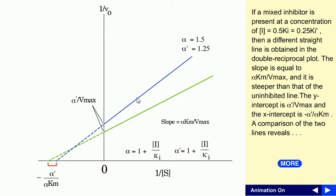With these values, we get a different straight line on the plot, but the lines are not parallel like in uncompetitive inhibition, and also not like competitive inhibition. The slope in this case equals α·Km divided by Vmax, which resembles the slope form of competitive inhibition and is steeper than the uninhibited line.